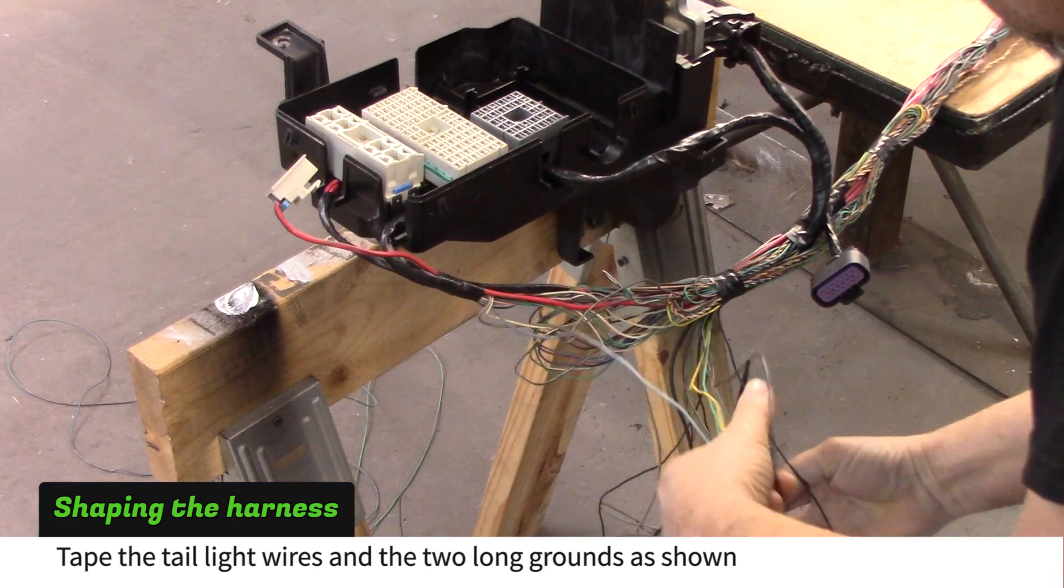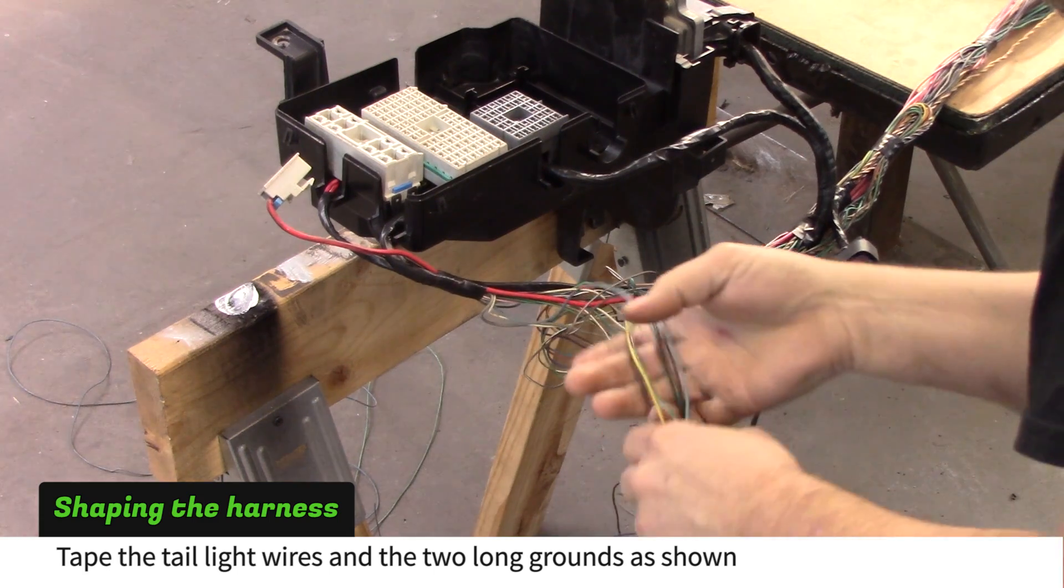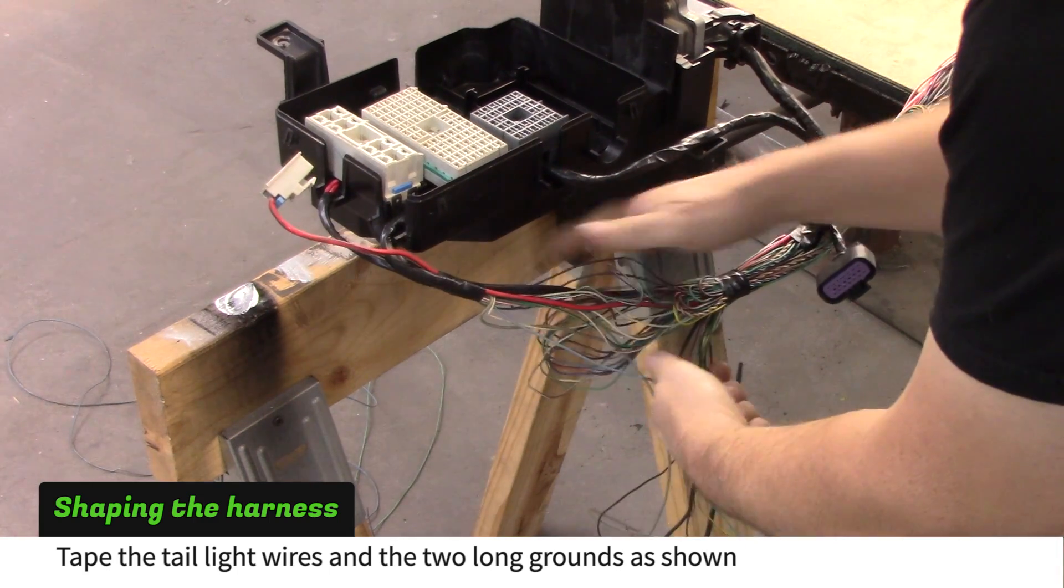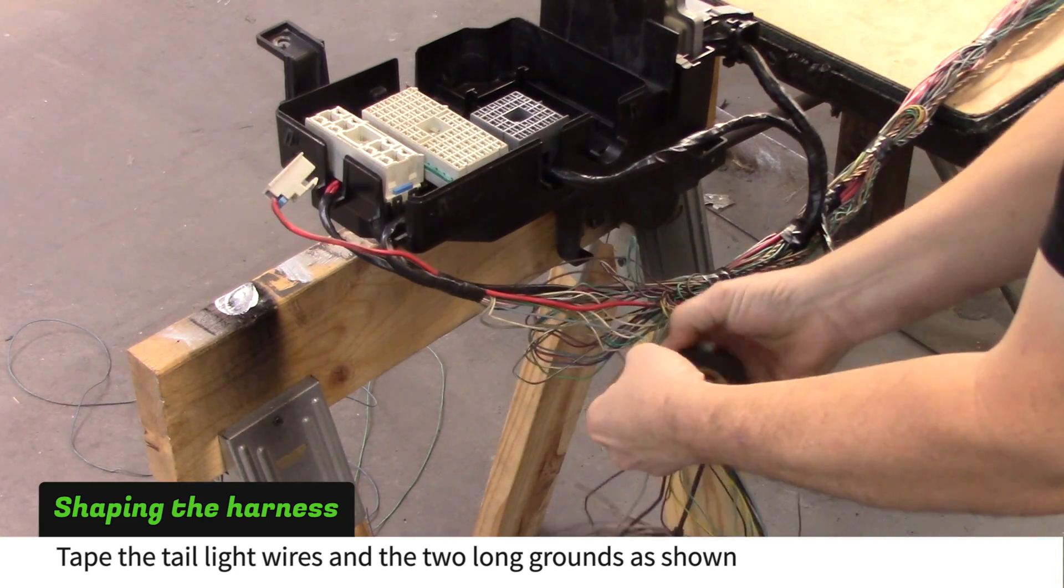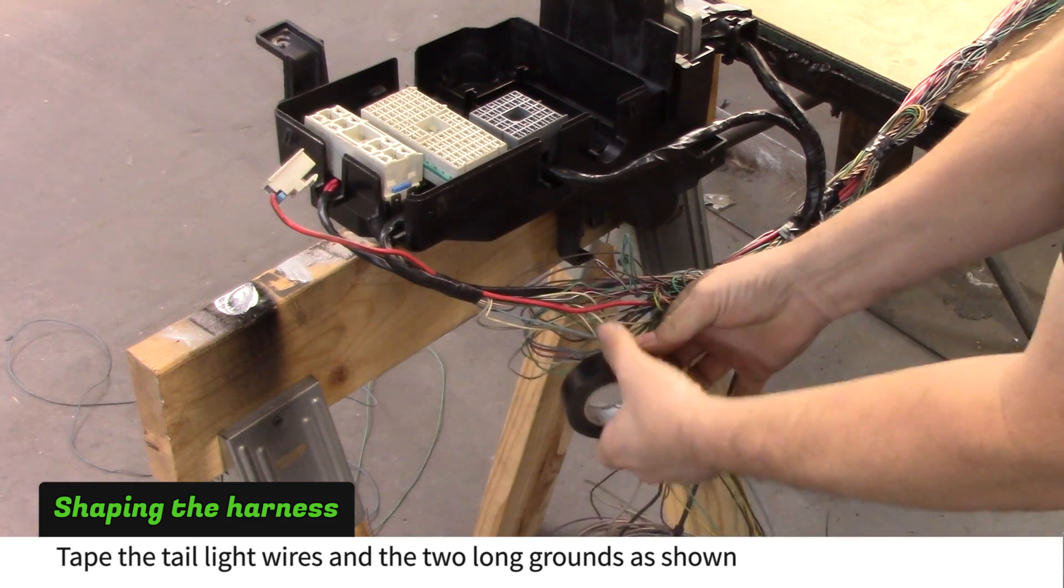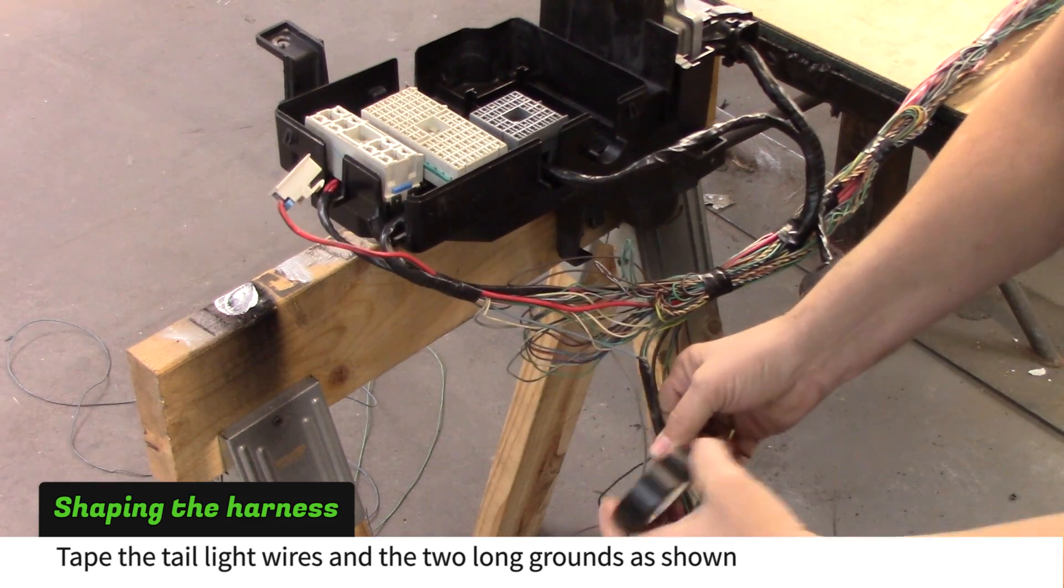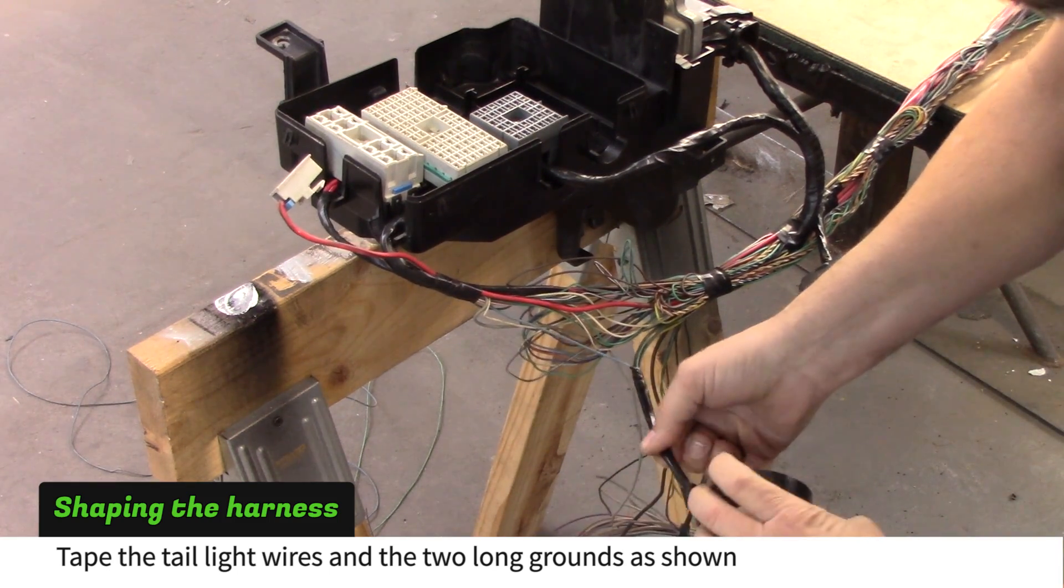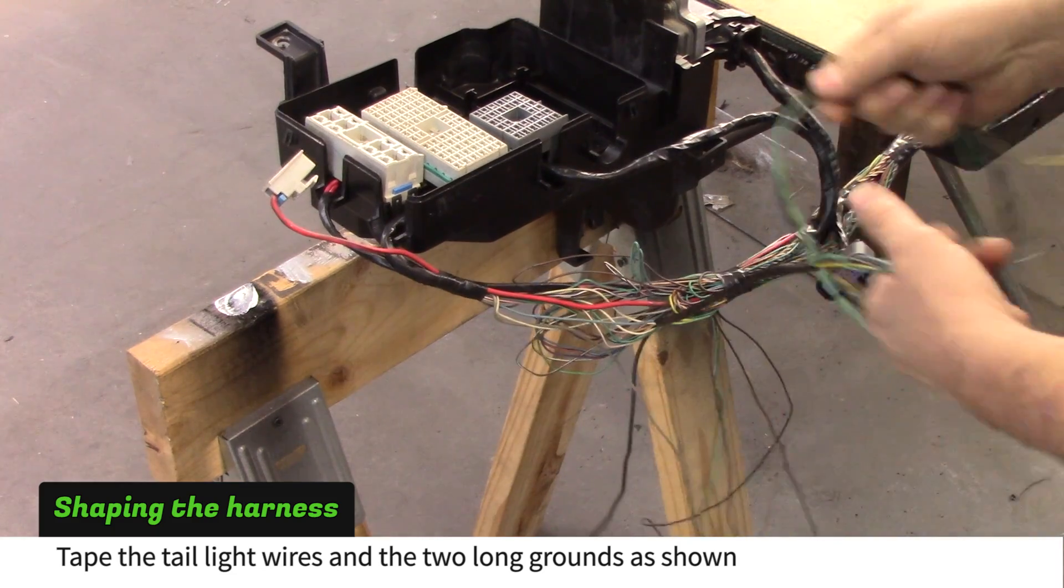Collect the tail light wires and the two longest grounds. There should be 7 wires: light blue, light green, yellow, green, brown, and 2 black ground wires. Starting near the main harness, tape these together for about 6 inches. Roll them up for later use.